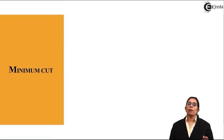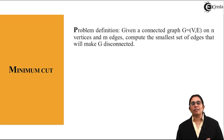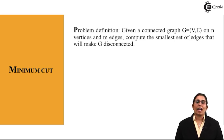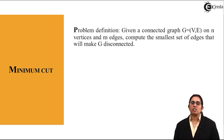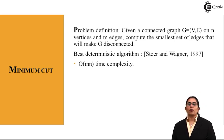Now what is a minimum cut which is implemented using the randomized algorithm? Given a connected graph G with N vertices and M edges, compute the smallest set of edges that will make G disconnected. The best deterministic algorithm is Tor and Wagner in 1997 which has a time complexity of big O(MN).